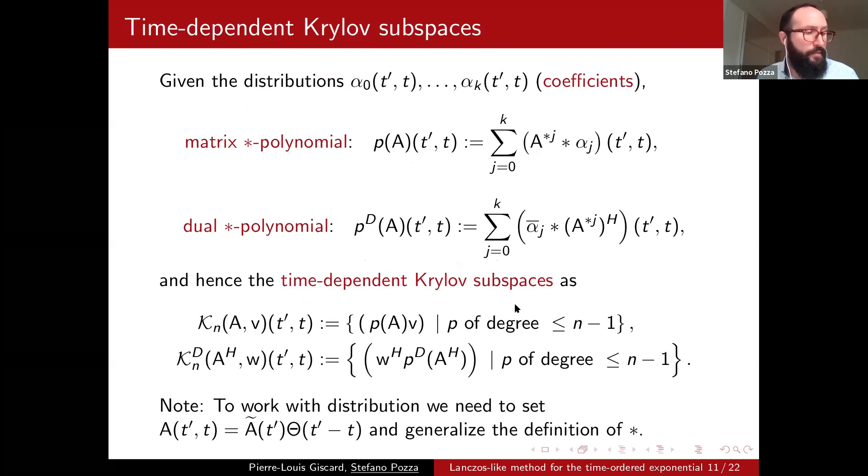So we will do the same. We need to define what are the time-dependent Krylov spaces for us. And to do that, we need to define the concept of matrix star polynomial and its dual. So basically we have already seen that we can define star powers of the matrix A. So to define a polynomial, basically we have to just introduce some coefficient multiplication, star multiplication by some coefficients. And for us coefficients will be distributions depending on two times t prime t, so some scalar distribution. So once you have a polynomial, you can also define the dual polynomial by multiplying by the left and considering the Hermitian transpose.